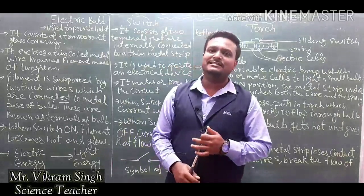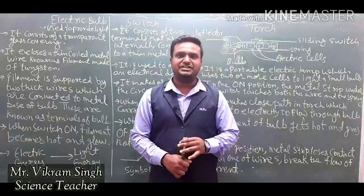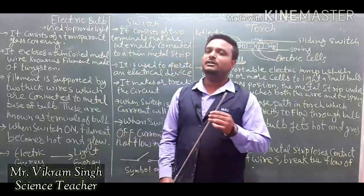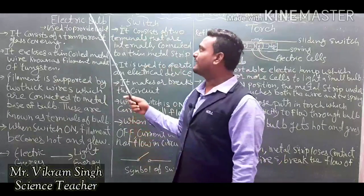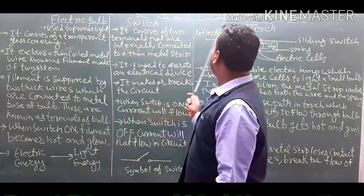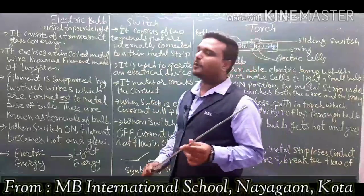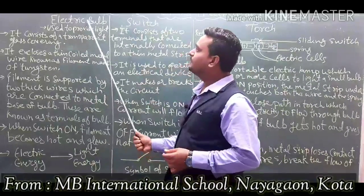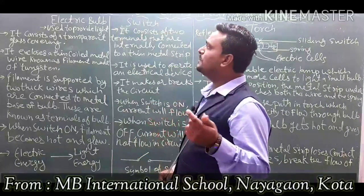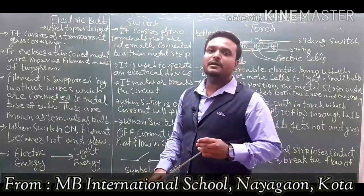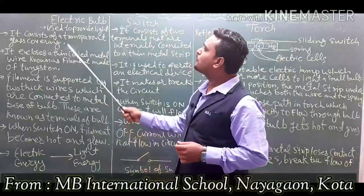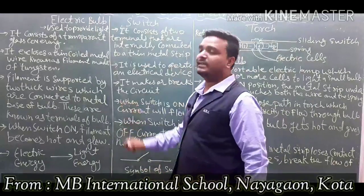After the discussion of electric cell and its classification, we now move on to the other topics: electric bulb, switch, and torch. First of all, let's talk about the electric bulb. Basically, an electric bulb is used to provide light.